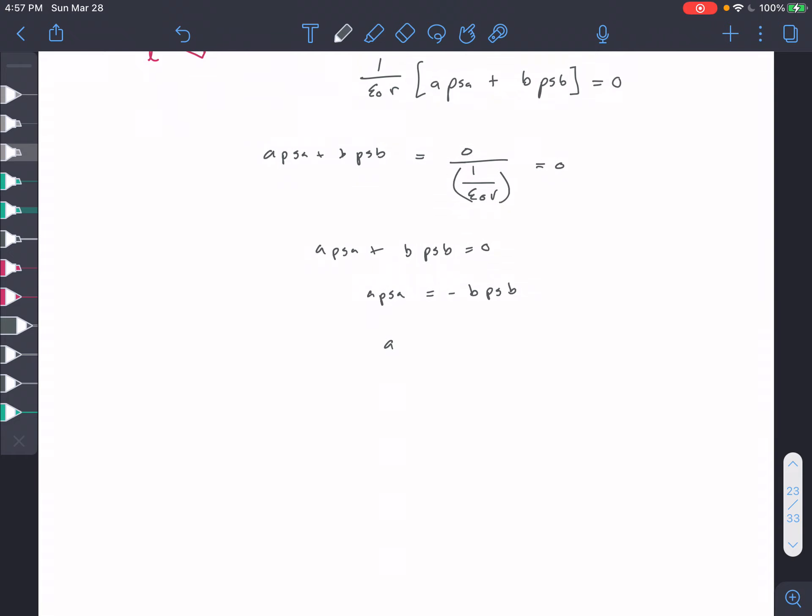And then A ρ_SA divided by B equals negative ρ_SB, and then A over B is equal to negative ρ_SB over ρ_SA.